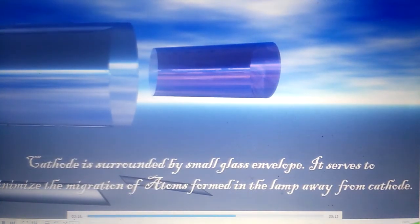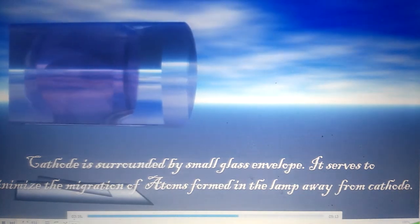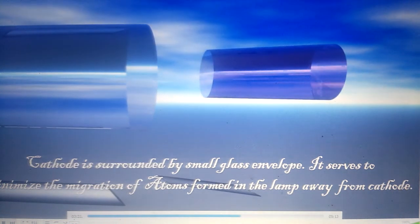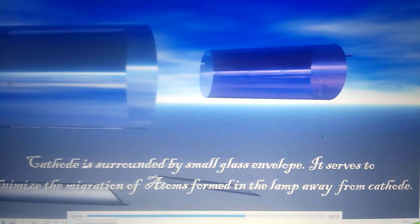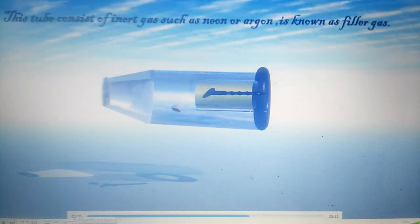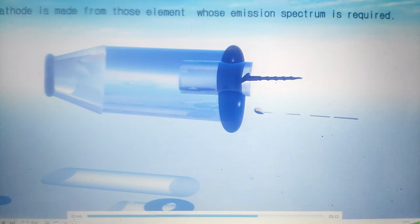The cathode is surrounded by a small glass envelope, which serves to minimize the migration of atoms formed in the lamp away from the cathode. The tube consists of inert gases such as neon or argon, known as filler gases. The cathode is made from those elements whose emission spectrum is required.